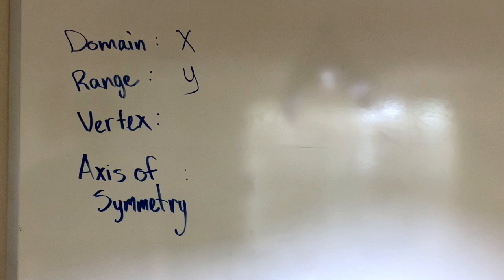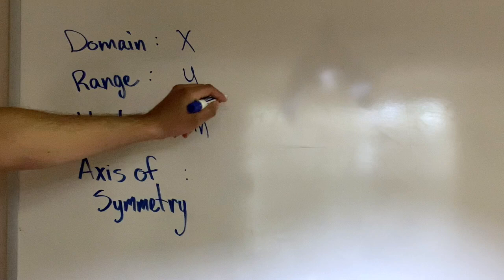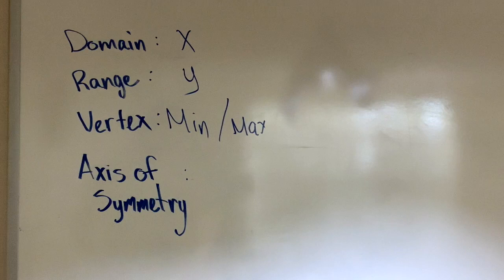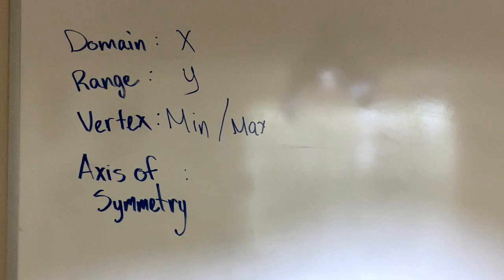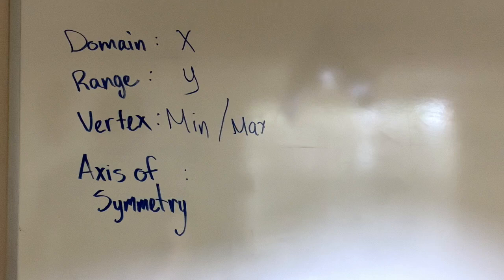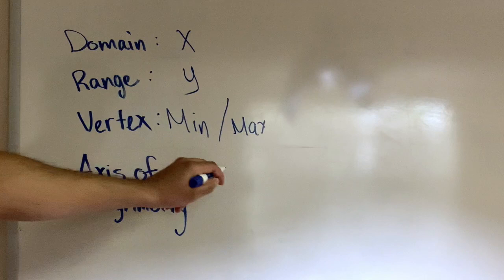The vertex would be either the minimum point or your maximum point. You would have to analyze your graph, your parabola, and determine if you have a minimum point or a maximum point. The axis of symmetry is a vertical line which cuts the parabola in half. And because it's a vertical line, the axis of symmetry will always start with x equals.